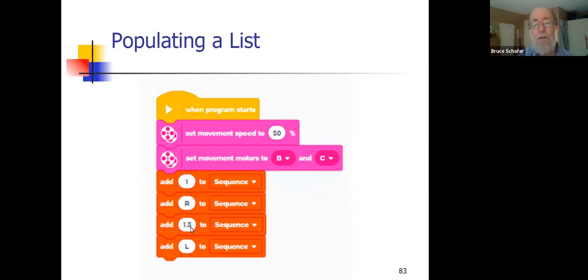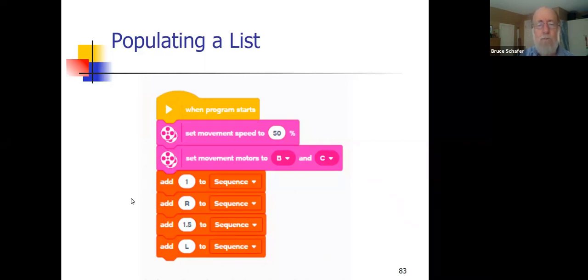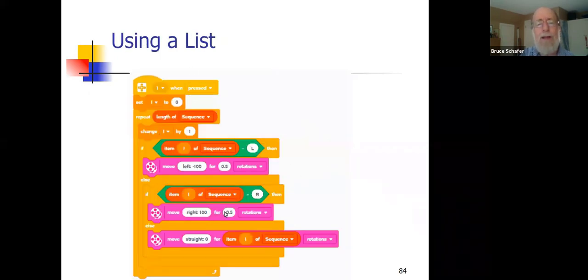A question from Chris: are sequences 1-based, not 0-based? Yes — lists in Scratch start at 1. Some programming languages are nerdy and make the first element 0, but in Scratch the first element is 1, which is more intuitive for kids. So the robot runs at 50% speed using motors B and C. The first element is 1, second is R, third is 1.5, fourth is L — adding to the end of the list each time. This is an event block at the top, so this code executes when the touch sensor is pressed.